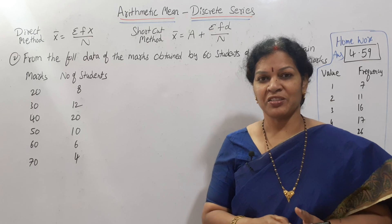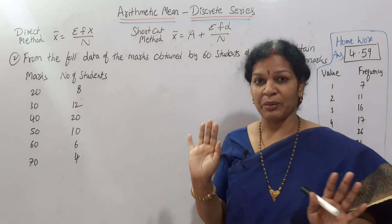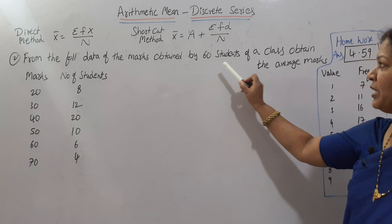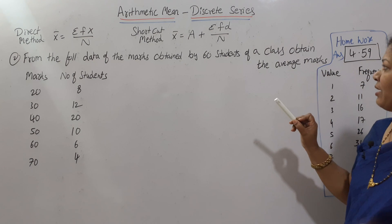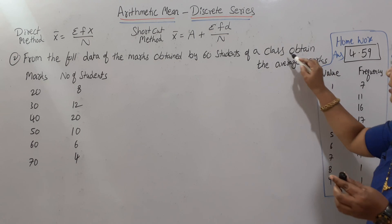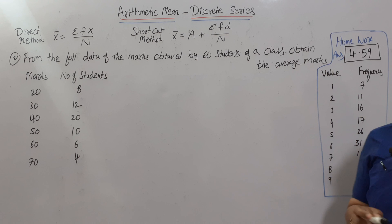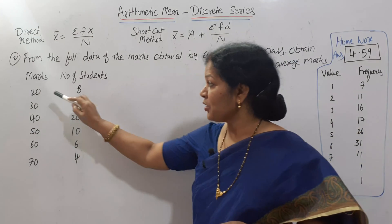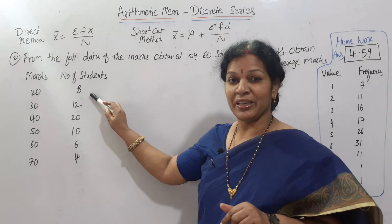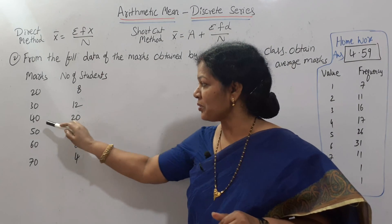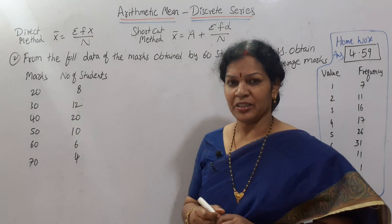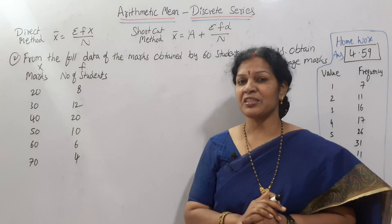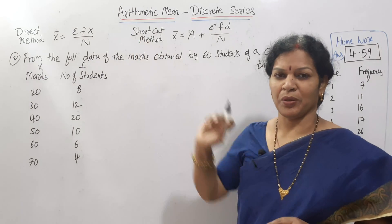In the exam, you can follow any method, but I would prefer the easy method to save time. Now I am going to show you both methods. The problem is given here: from the following data of marks obtained by 60 students of a class, calculate the average marks, meaning the arithmetic mean. The data is given as marks and number of students, and since both X and frequency are given, it is a discrete series.